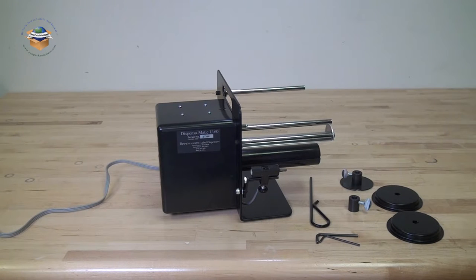This is the Dispens-O-Matic U60 with a photo eye. When you receive your U60, you will get the machine and the following loose parts.